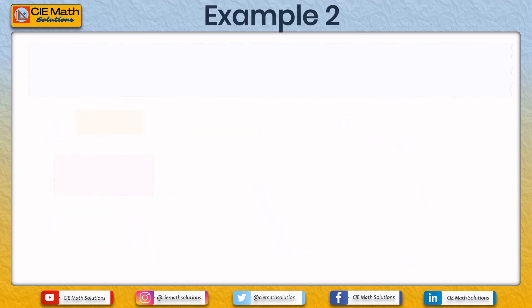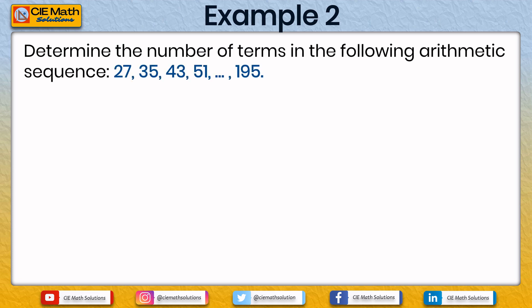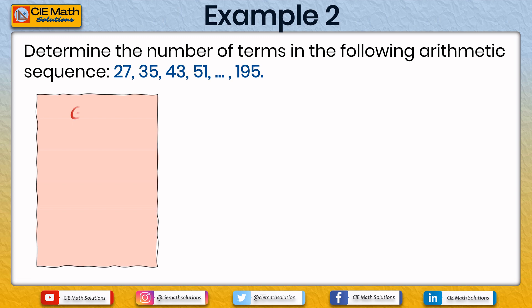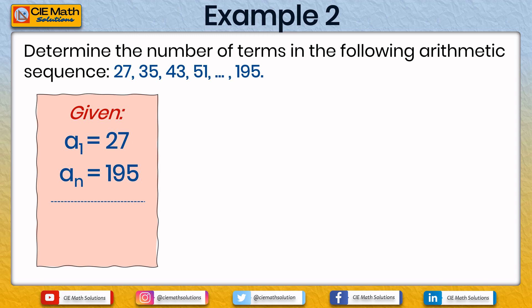For the second example, determine the number of terms in the arithmetic sequence: 27, 35, 43, 51, … 195. The first term is 27 and the last term is 195. The common difference is not given directly, but we can subtract consecutive terms: 35 minus 27 equals 8. You can verify this with any consecutive terms: 43 minus 35 equals 8, and 51 minus 43 equals 8. So the common difference is 8.